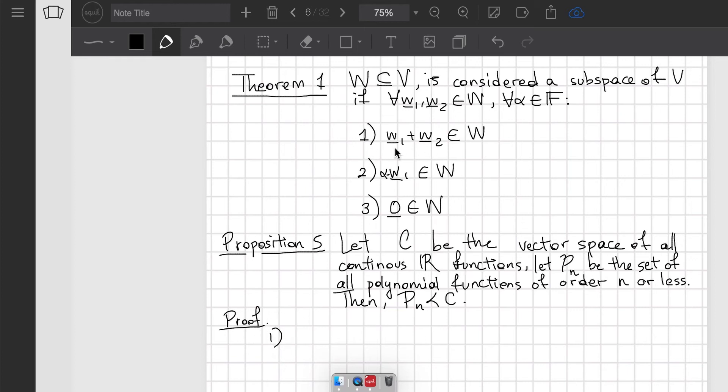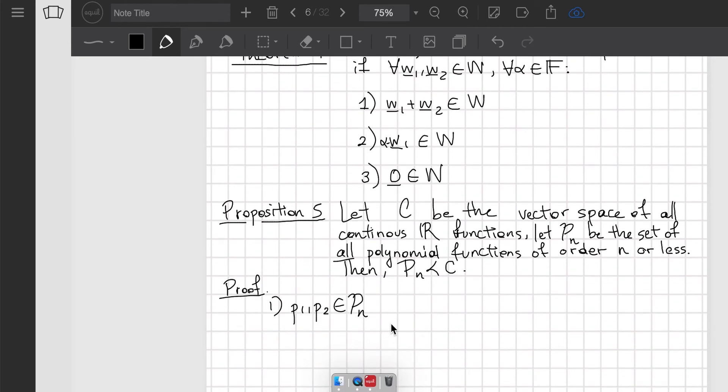Let's start by proving the first condition: closure under addition. Let P1 and P2 belong to P_n. That means they are polynomials of order n or less.